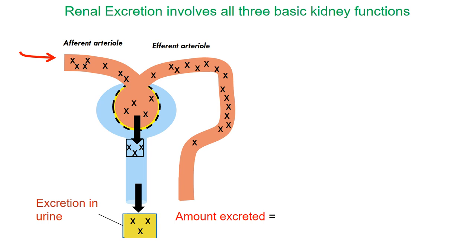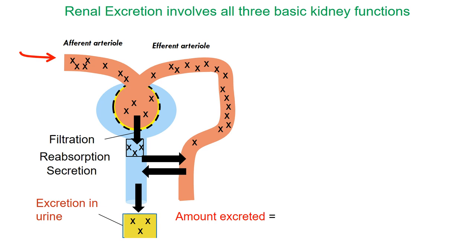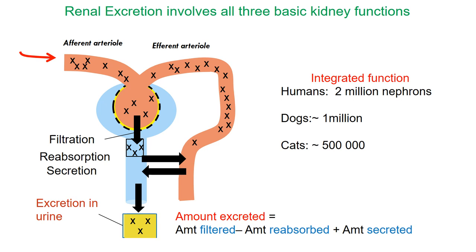The nephron is the functional unit of the kidney and it performs three basic functions: starting with filtration at the glomerulus, it can reabsorb substances required by the body, and it can secrete substances that escape filtration. Renal excretion is the sum of these three functions and requires the integrated function of all nephrons. Humans have approximately two million nephrons, whereas dogs have about one million and cats about half a million.